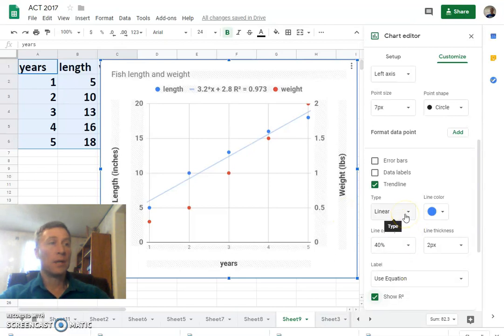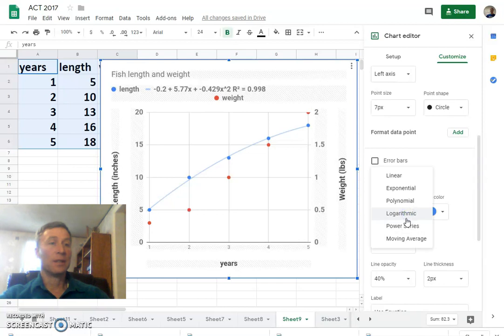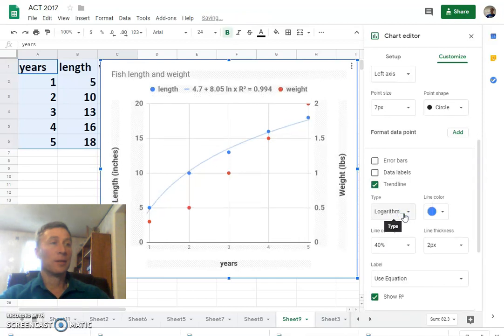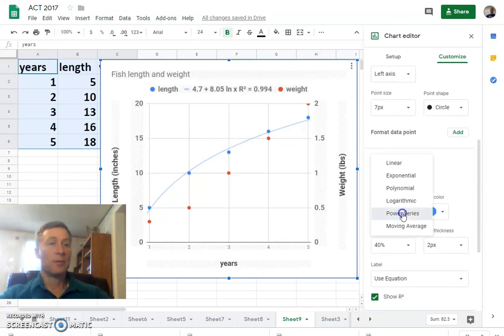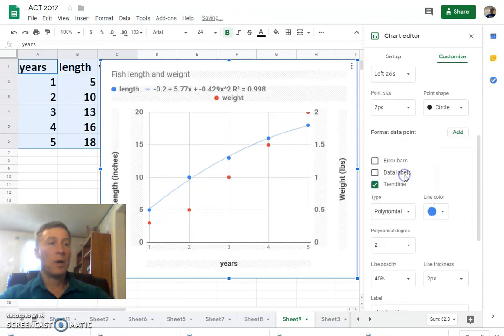But what if we change that to exponential? 0.9, that's not as good. Polynomial. 0.99, wow, that's really good. Anyways, different options. Let's use polynomial. That's not too bad, 0.99.